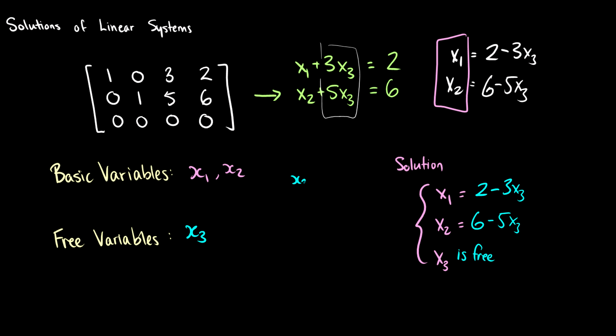Because if we pick x3 is equal to 0, then x1 is going to be 2, and x2 is going to be 6. But if we pick x3 is equal to 1, then x1 is going to be negative 1, and x2 is going to be 1. So we get these different solutions depending on what we assign our free variables.